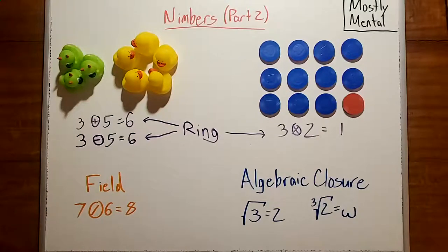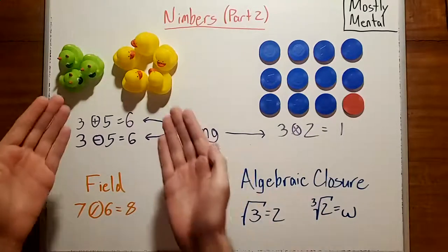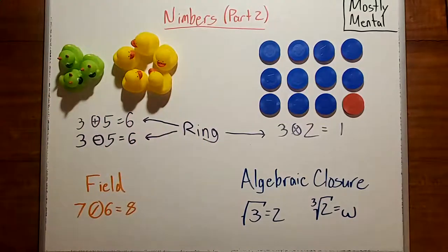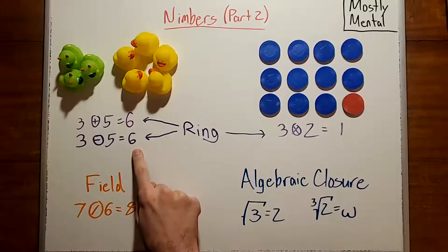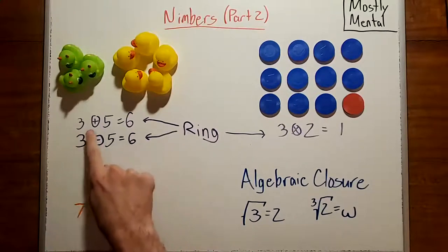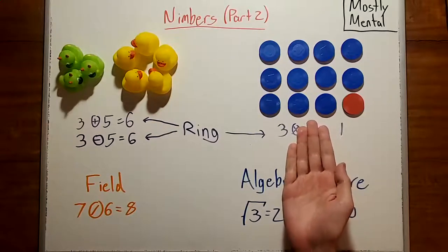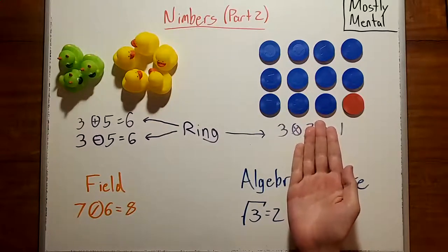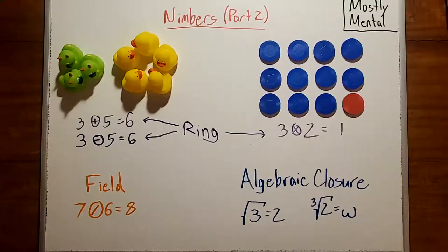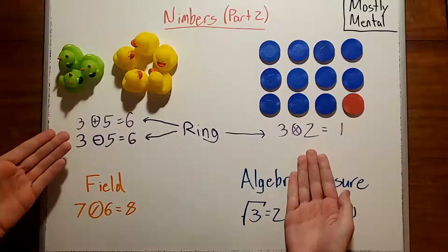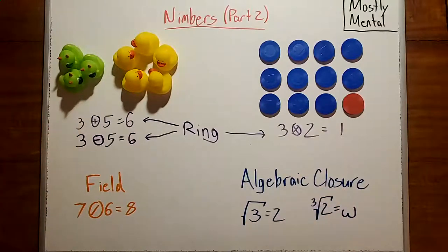Today, we're going to study the nimbers as an algebraic structure. In the last video, we talked about adding nimbers, which came from playing two games at the same time. And we noted that subtraction was the same thing as addition. We also saw that we could multiply nimbers by playing a two-dimensional analog of nim. And once we've defined addition, subtraction, and multiplication, we have what the algebraists call a ring. And that lets us use all the tools of algebra to study the nimbers.